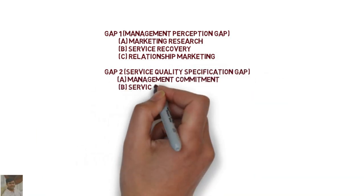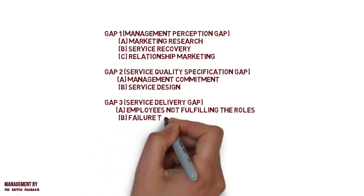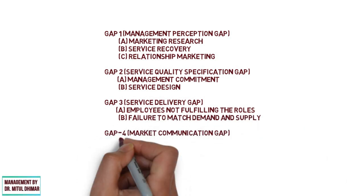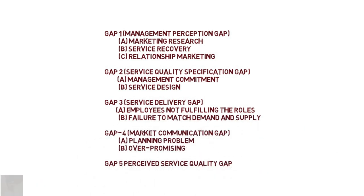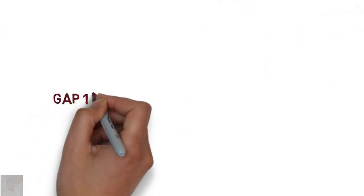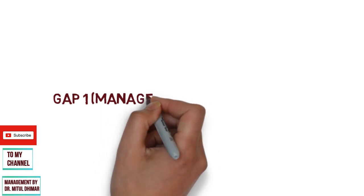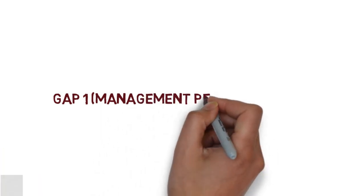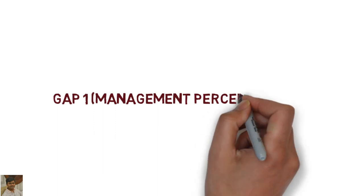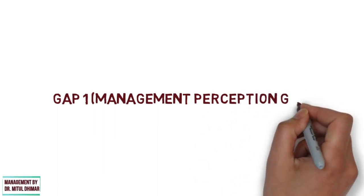Please watch this video till the end because you will find different examples in each and every point we are going to study today. Gap number one is the management perception gap. The first gap occurs due to the difference between customer expectation and management's perception of customer expectation.